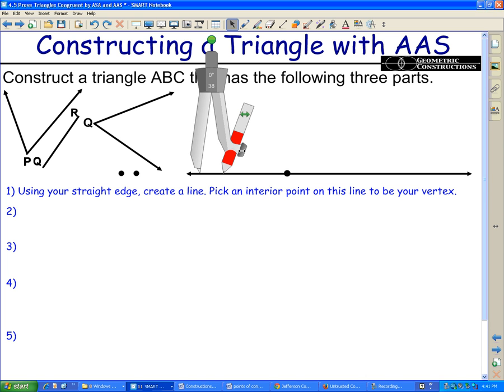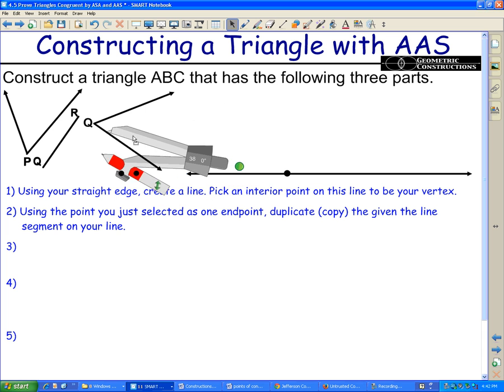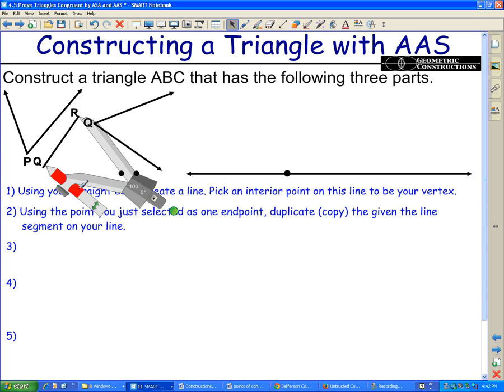So hang in there and just understand that our first goal is to draw a straight line and pick a point inside. What we're going to do now is grab our one line segment. They gave us one line segment and we're going to use our compass to spin around and measure the distance.